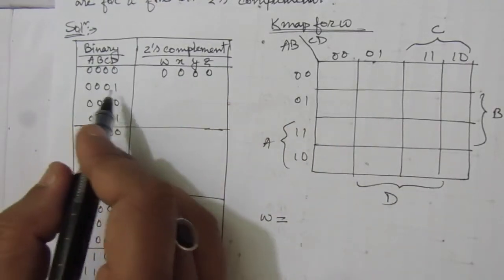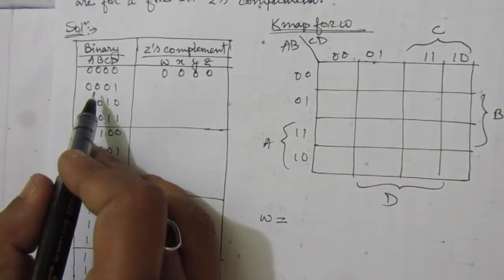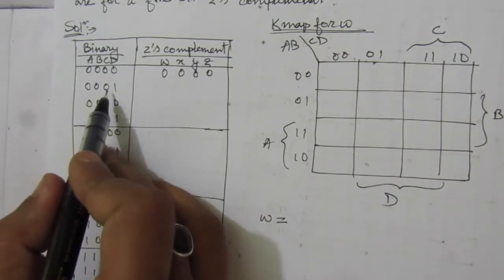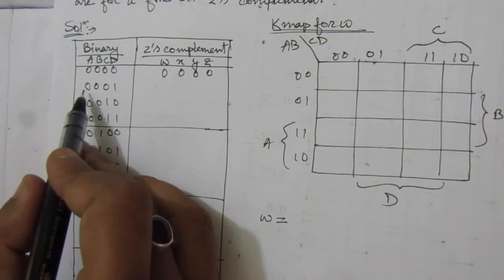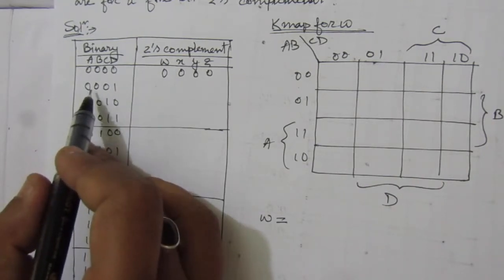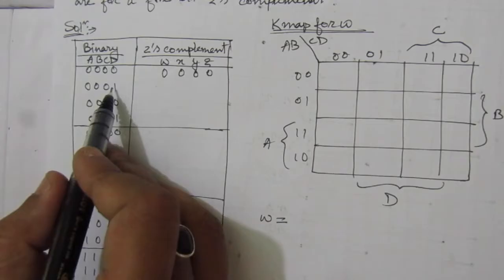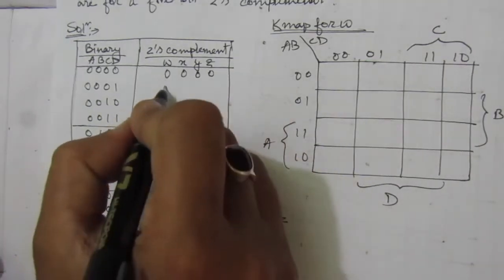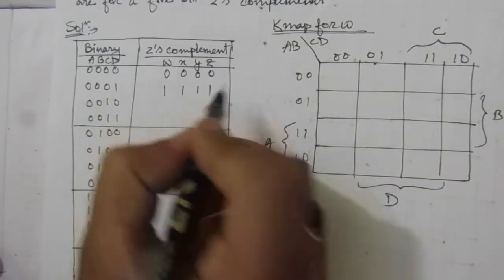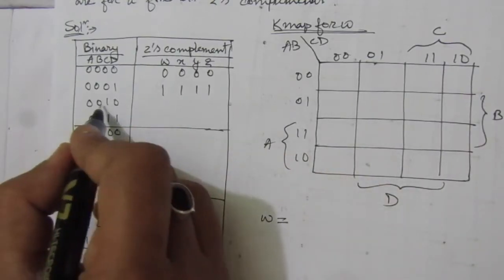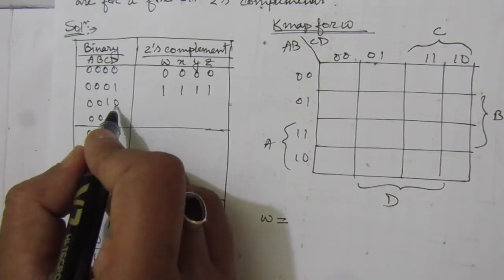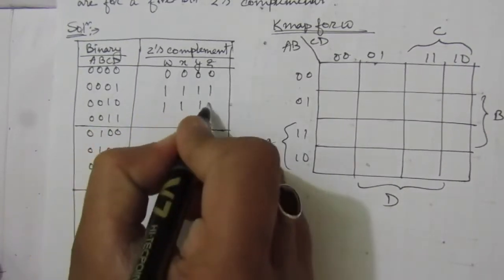For 0001, the one's complement will be 1110 — you just have to invert the binary bits. Then for finding out the two's complement, we add 1 to get 1111. For 0010, the one's complement will be 1101, giving two's complement 1110.